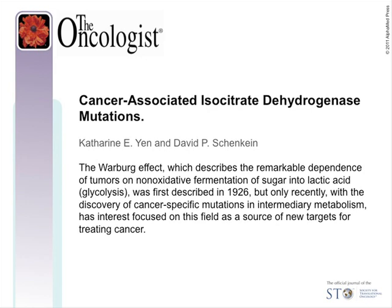Recently, the identification of IDH1 and IDH2 mutations in central and periosteal chondrosarcomas, as well as intrahepatic cholangiocarcinomas, further expanded the role of IDH1 and IDH2 mutations in human cancer and implied that the functional consequence of these mutations — for example, high levels of 2-HG — may confer similar biological effects across multiple tissue types. The potential mechanism by which IDH mutations and their product, 2-HG, cause cancer has been elucidated by the discovery that 2-HG acts as a competitive inhibitor of alpha-KG-dependent dioxygenases.